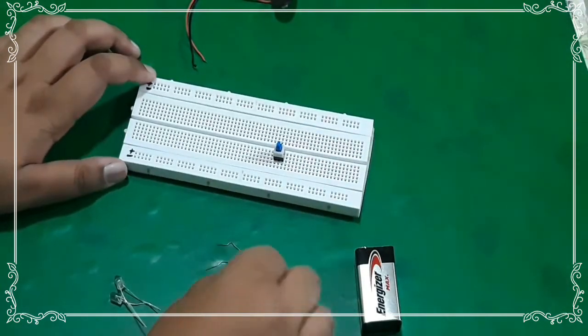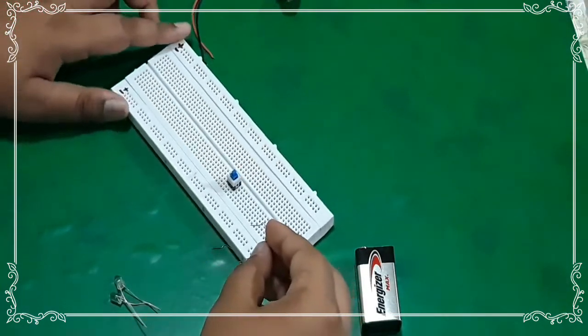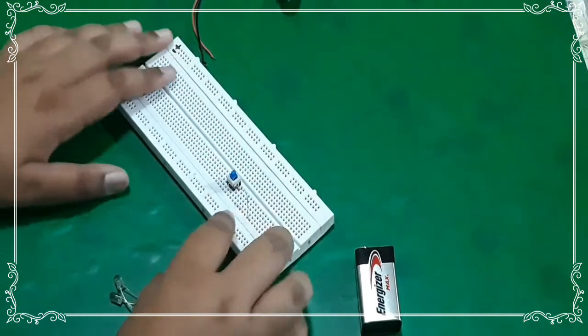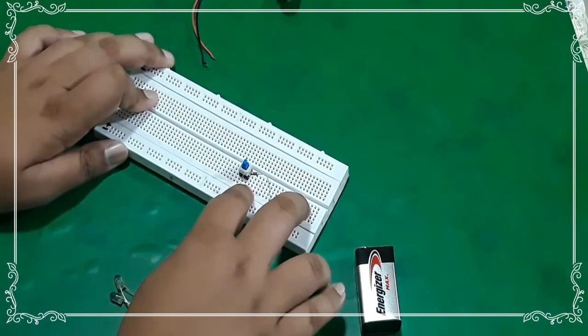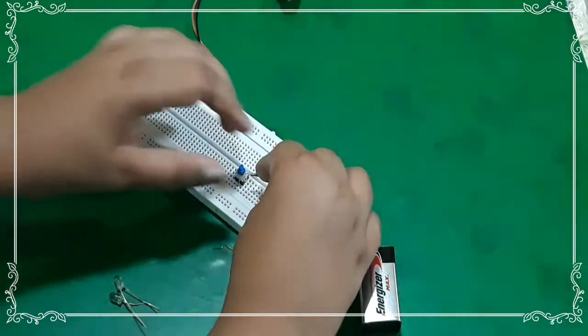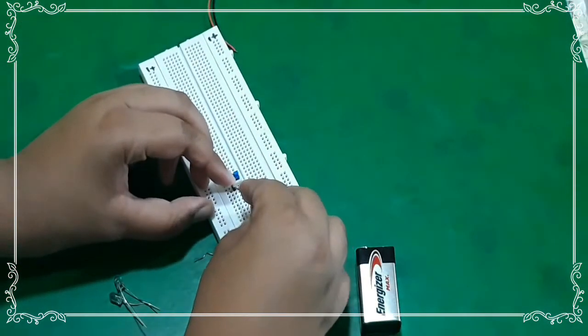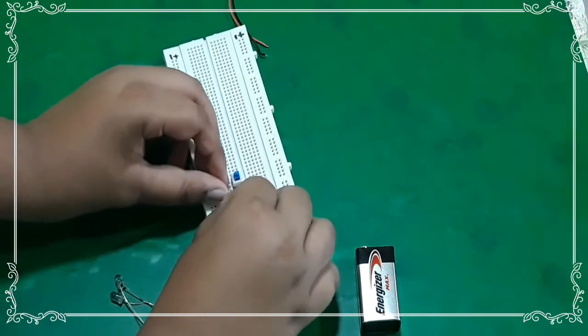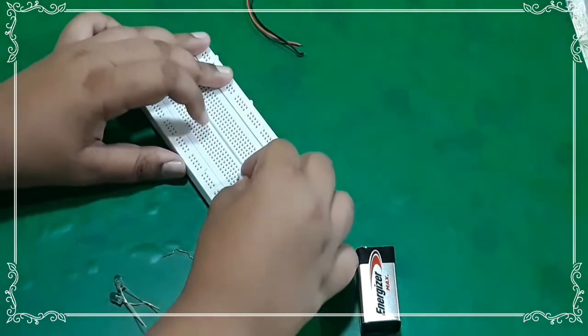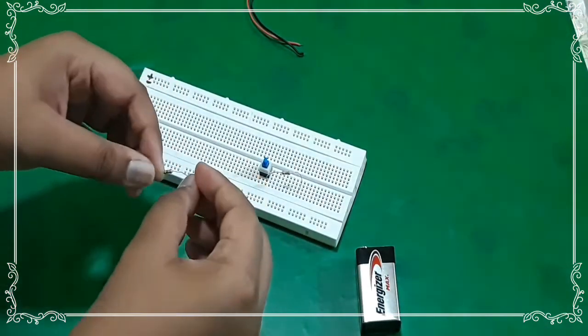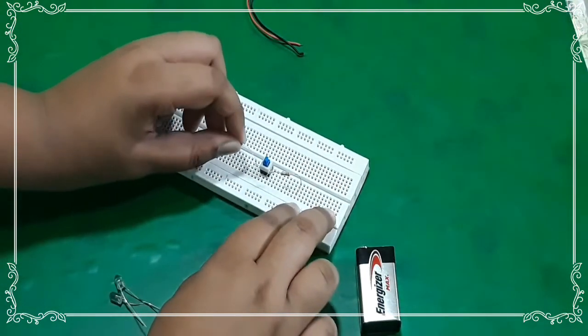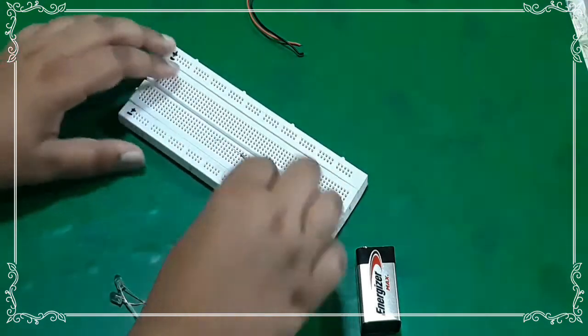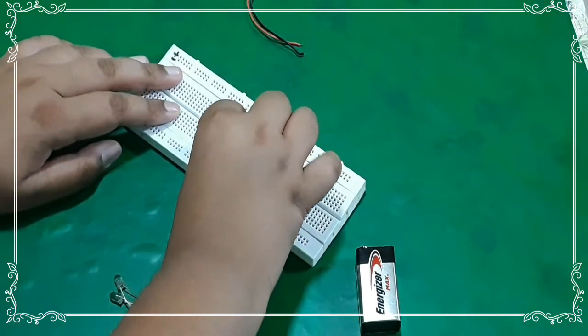And now you have to take one of the resistors and connect it on either of the sides of the SPDT switch, and the second terminal anywhere on the breadboard. And now connect the second resistor on the other side of the SPDT switch, and the second terminal anywhere on the breadboard.